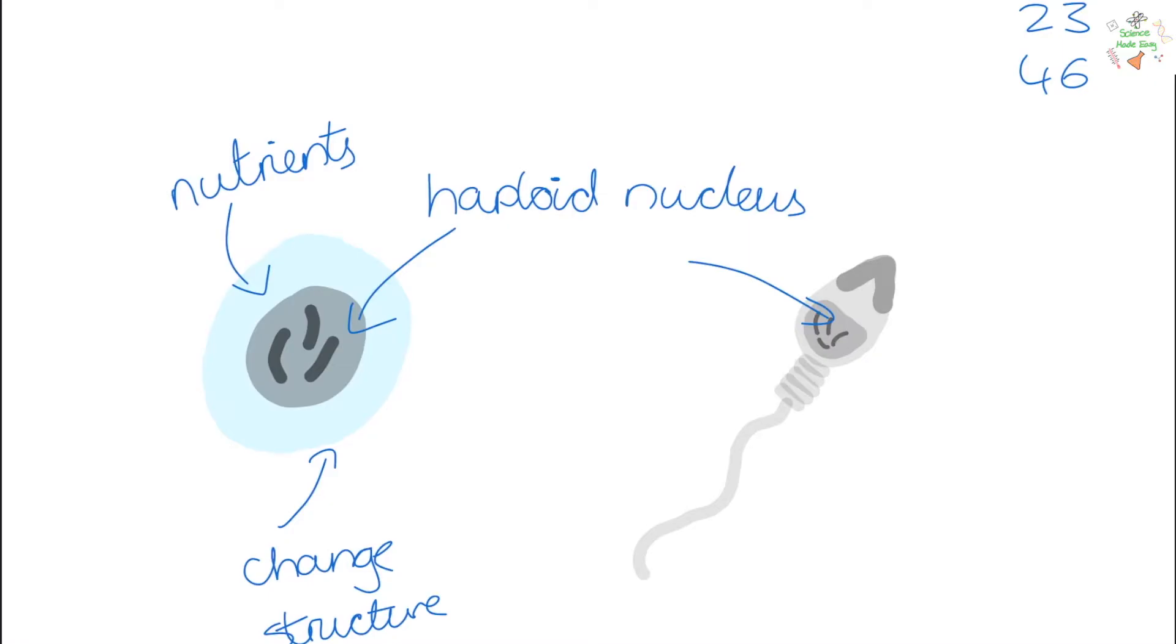At the top of the sperm cell we have the acrosome. This is filled with enzymes that are released to help break down the egg cell. Underneath the head we have lots of mitochondria. This gives it lots of energy to reach the egg cell. Then we have a tail for movement.